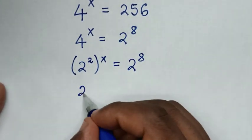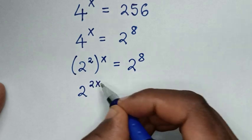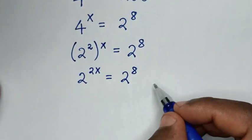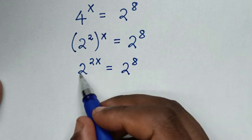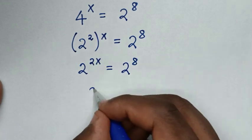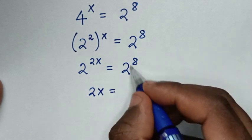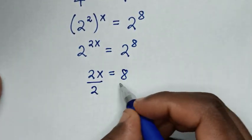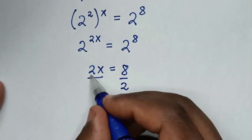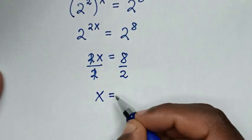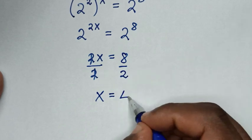Then it will be 2^(2x) equals 2^8. When we compare here, we have the same base of 2, so we will compare these powers. So it will be 2x = 8. Then we divide by 2 on both sides, so these will cancel. Then x = 8 divided by 2, which is 4.